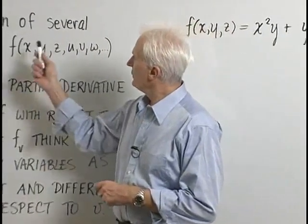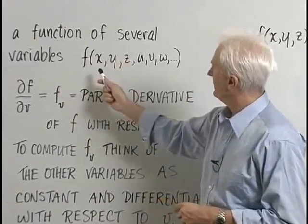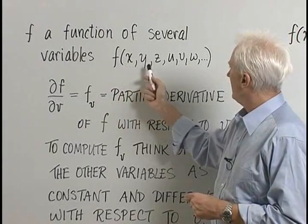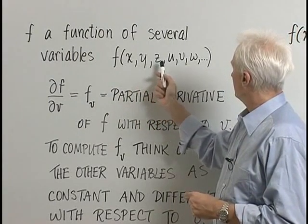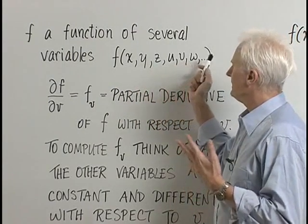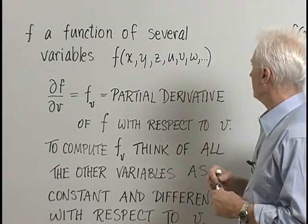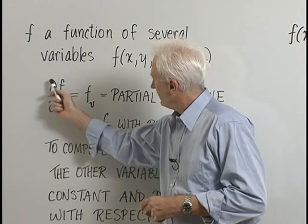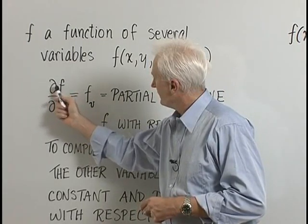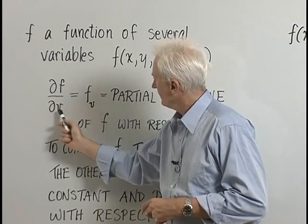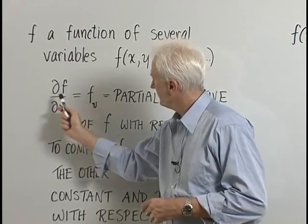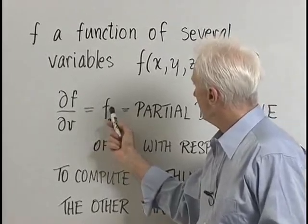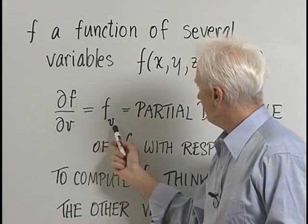For a function of several variables — f could be a function of x, y, or x, y, z, or x, y, z, u, v, w — any number of variables. When we write this Greek delta symbol, it's pronounced delta, and delta f over delta v is also denoted f with a little subscript v.